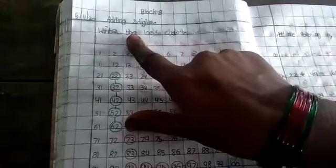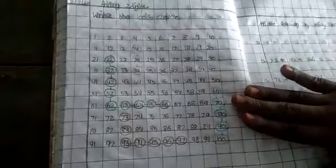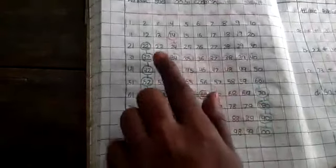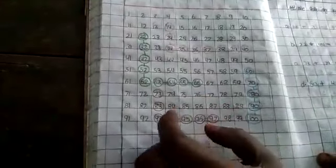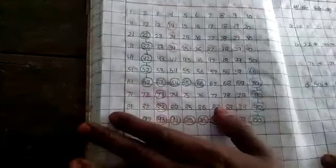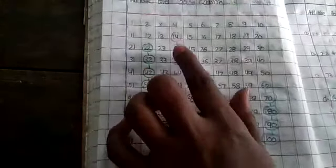First, write the 100 chart numbers children. You have to write 1 to 100. After writing this, take the crayons, use the color pencils. Different colors you have to use children.